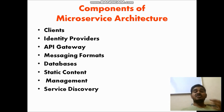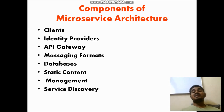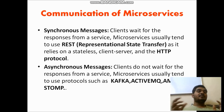The components of microservices are: clients who use the services, identity providers who supply authentication, API gateways which provide different services and messaging formats. In order to communicate between one microservice and another, we use messaging formats. Databases are independent and multiple for each module, so there is no dependency. Static content is the data microservices provide to the client. Other components include management and service discovery. Microservices communicate in two ways: synchronous and asynchronous.